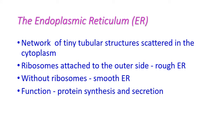The endoplasmic reticulum is a network of tiny tubular structures scattered in the cytoplasm. Ribosomes are sometimes attached to the outer side of the endoplasmic reticulum — when attached, it is known as rough endoplasmic reticulum. When ribosomes are not attached, it is called smooth endoplasmic reticulum. The function of the endoplasmic reticulum is protein synthesis and secretion.